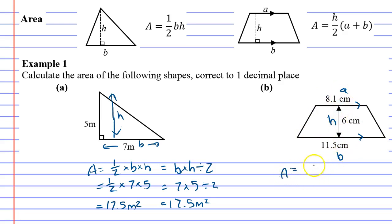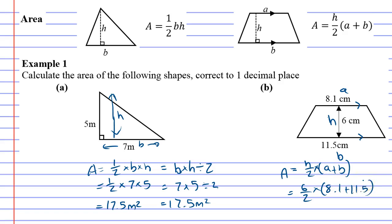We're going to grab our formula: area equals h over 2, bracket a plus b. Now h is 6, so it's 6 over 2 — there's a hidden times here — times bracket 8.1 plus 11.5, close the brackets. And we get 58.8. This one's in centimetres, so centimetres squared.